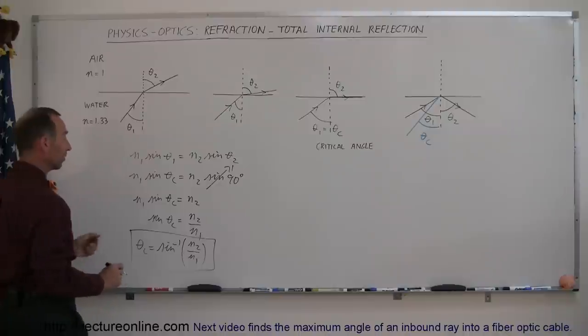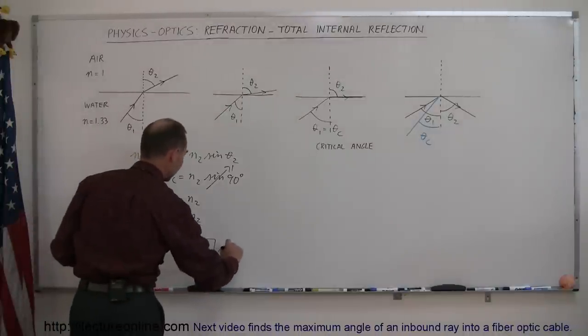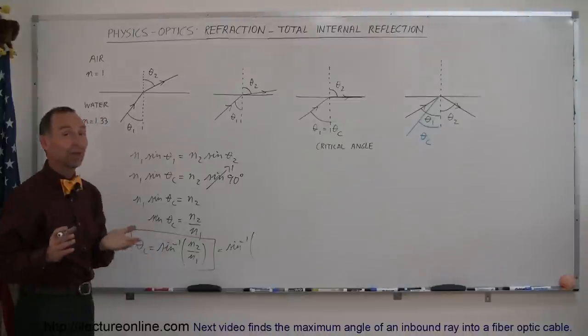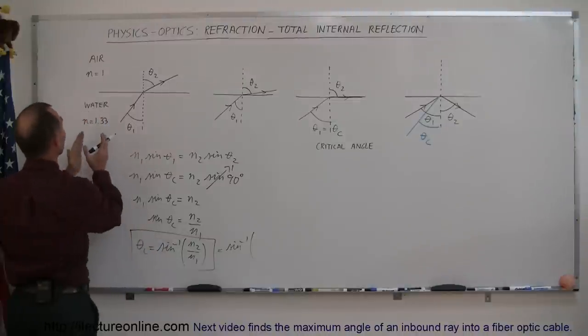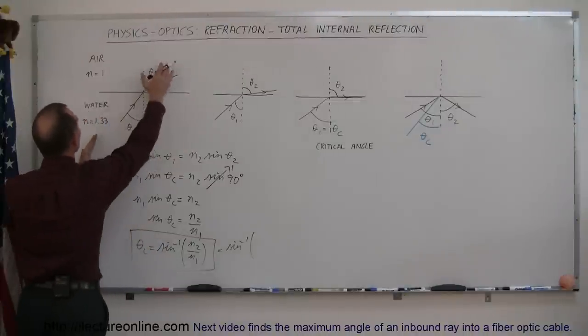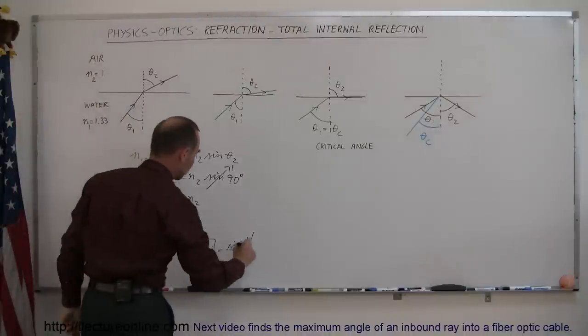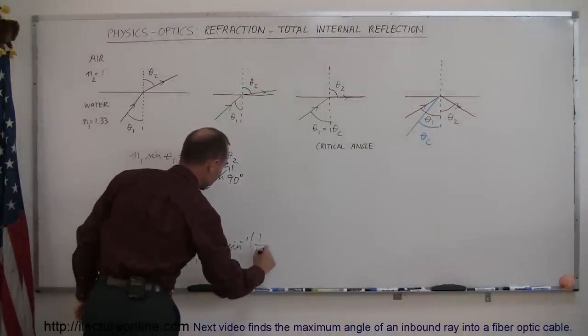Now if we plug in the numbers we can see that in this case the critical angle is equal to the arc sine of N2. Which one is N1 and N2? Well, since we're coming from this region to that region, we'll call this N1 and this N2. So in this case N2 is 1 and N1 is 1.33.